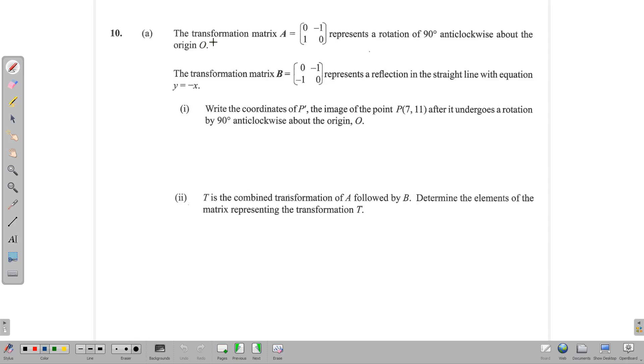The matrix A, 0 negative 1, 1 0, represents a rotation of 90 degrees anticlockwise about the origin O. The matrix B, 0 negative 1, negative 1 0, represents a reflection in the straight line with equation Y equals minus X. Our first task is to write down the coordinates of P', the image of the point P(7, 11), after it undergoes a rotation by 90 degrees anticlockwise.